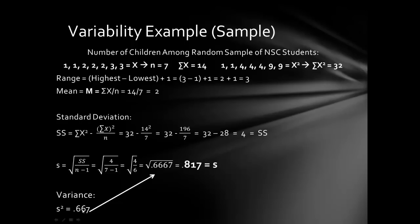The variance is just the value before you take the square root, rounded to the thousandths place: 0.667. As a shortcut: if the standard deviation is 9, the variance is 81 (nine squared). If the variance is 9, the standard deviation is 3 (square root of 9). The standard deviation is always the square root of the variance, and the variance is always the squared standard deviation.